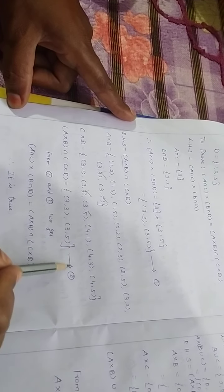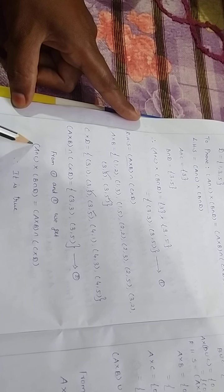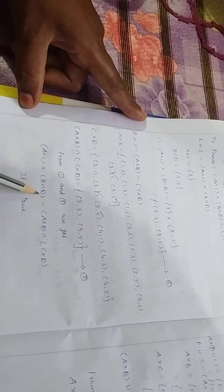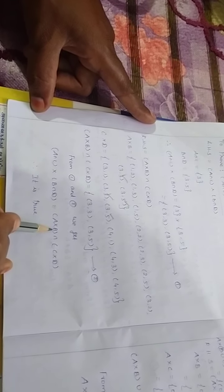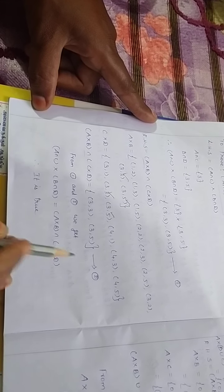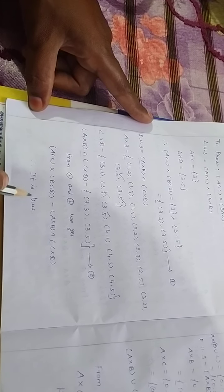From equation 1 and equation 2, we get (A ∩ C) × (B ∩ D) = (A × B) ∩ (C × D). It is true.